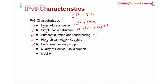IPv6 supports IPSec end-to-end by design and also has built-in QoS. Even in IPv4 we have the type of service header, but in IPv6 the QoS has been redefined and integrated into IPv6 — we will discuss more when we touch on the header later on. Finally, IPv6 also allows built-in mobility.